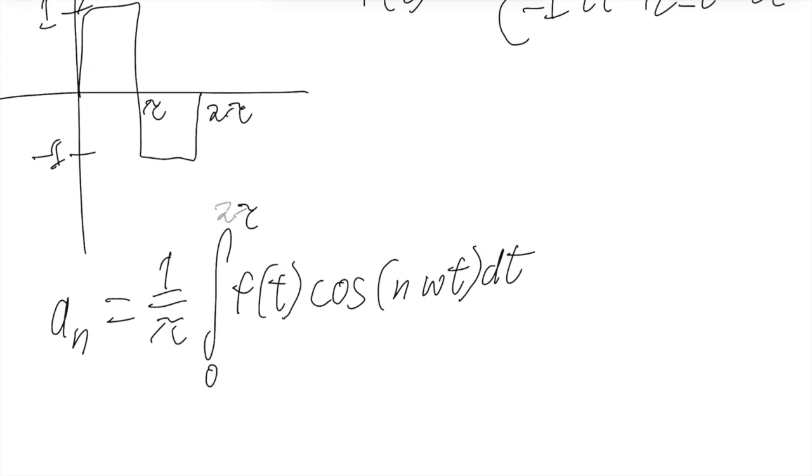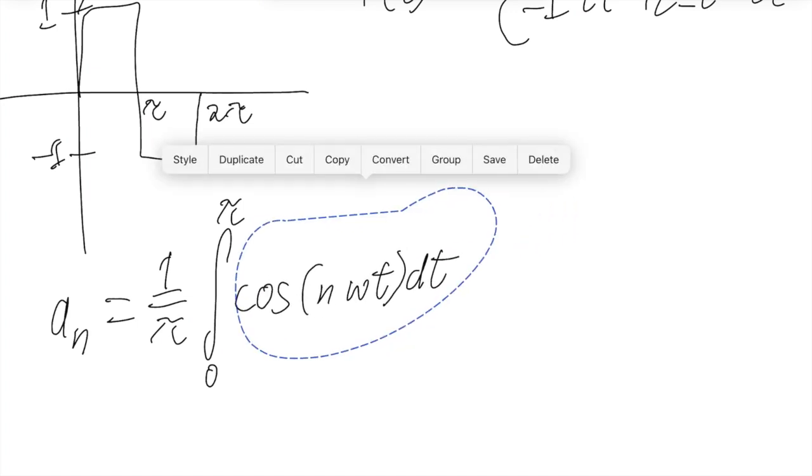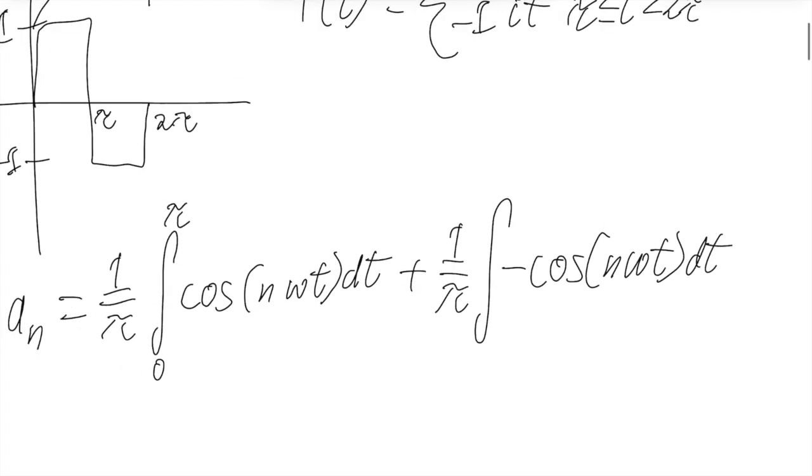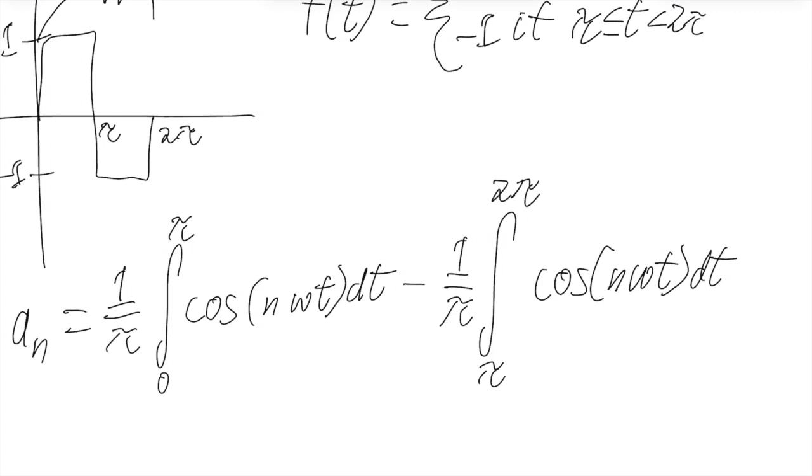So in the first part from 0 to π, it'll equal to 1. So we can just put cosine of n omega t. And in the second case, it'll equal to negative one. So negative cosine of n omega t dt. And this will be from π to 2π. And to tidy things up a bit, we can bring this negative sign out to here.